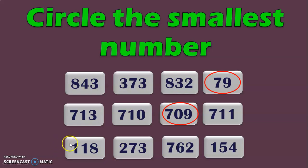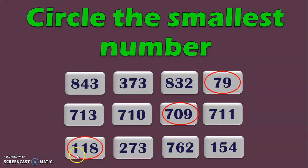One last example: we have 4 three-digit numbers — 118, 273, 762 and 154. First, look at the hundreds place where you have 1, 2, 7 and 1. We know that 1 is the smallest, so now we compare the 2 numbers with 1 in the hundreds place. Move on to the tens place and compare 1 and 5. We know that 1 is lesser than 5. With that, you can conclude 118 is the smallest number in the given series.